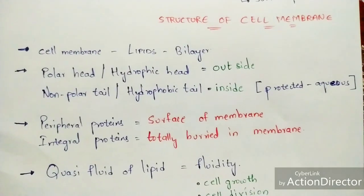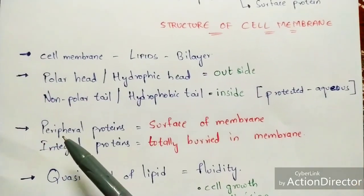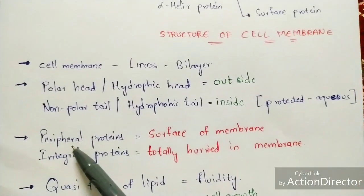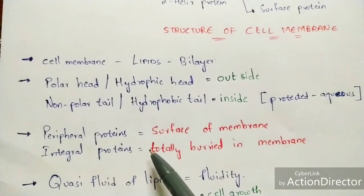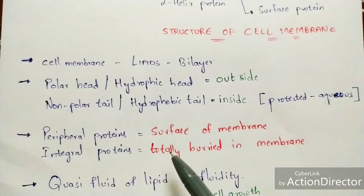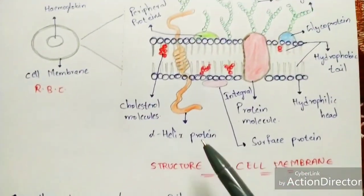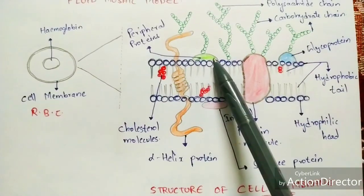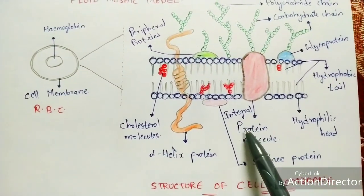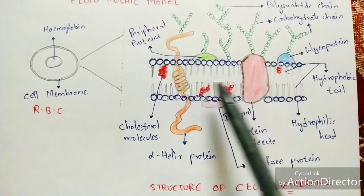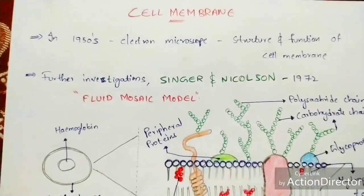Another important point to remember is about peripheral proteins and integral proteins. Peripheral proteins are present at the surface of the membrane. Integral proteins are totally buried inside the membrane. These peripheral proteins are represented at the surface of the membrane, while integral proteins are completely embedded within.